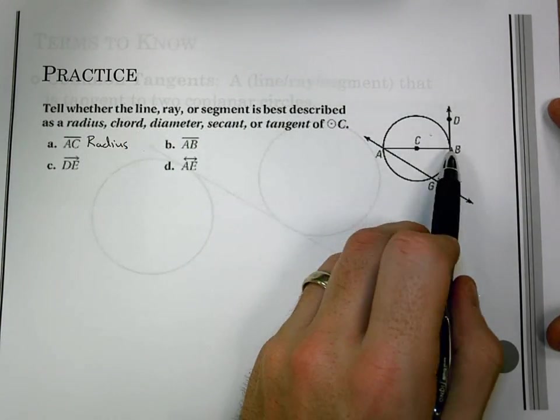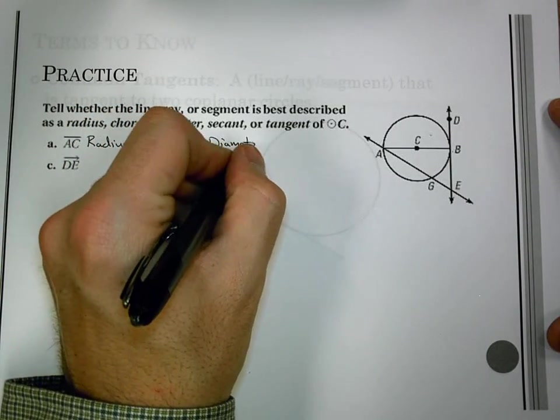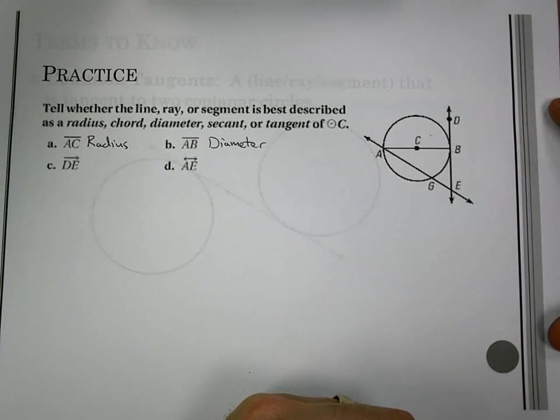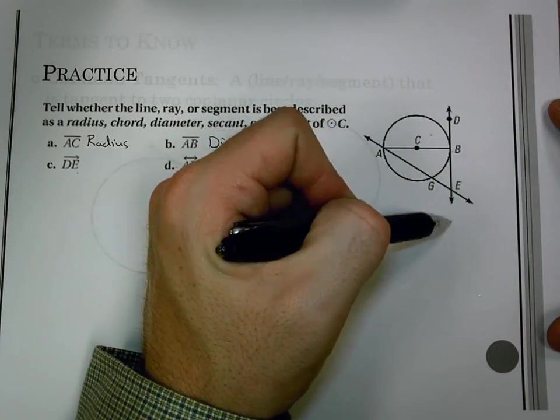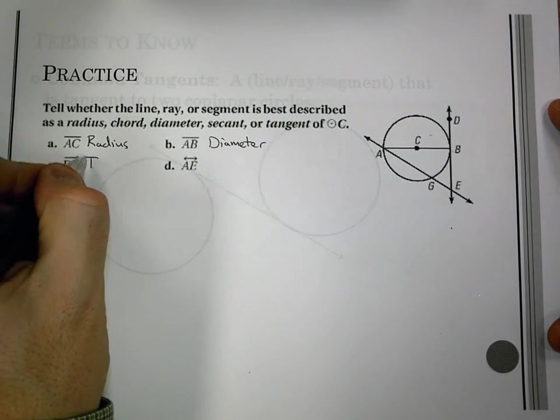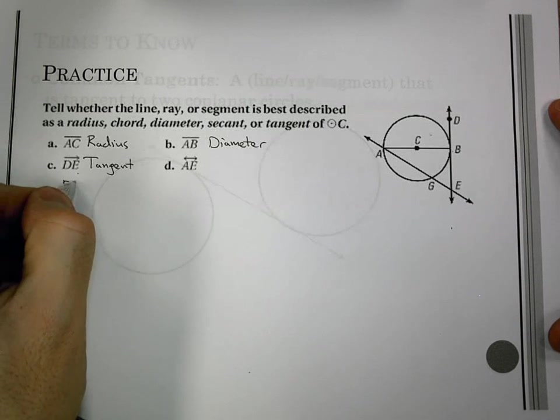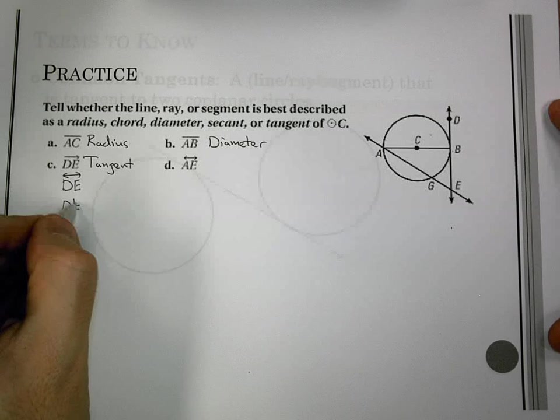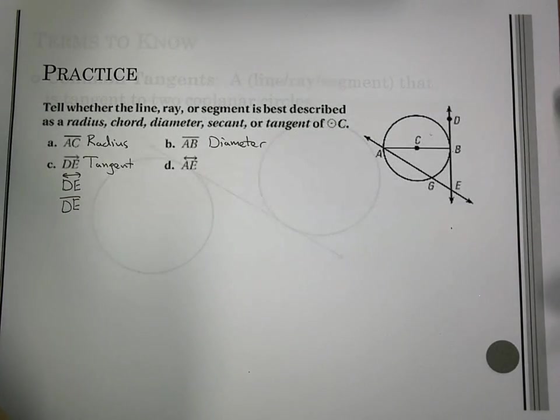Segment AB starts on the circle, ends on the circle. So that's a diameter. We have to be careful not to call that a chord. Even though it technically is a type of chord, the fact it goes to the center, it is a diameter. We have DE that starts at D, goes through E, but it hits the circle at point B. That makes it a tangent. Now also realize we could have also called it DE like this, or even as a segment. And the fact that it comes in and hits the circle at one point, it would still be a tangent.